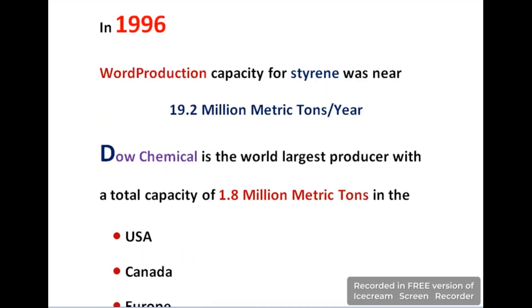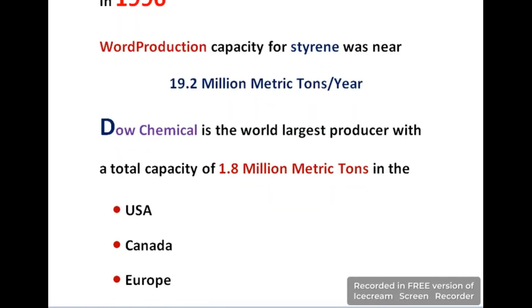In 1996, polystyrene production capacity was 19.2 million metric tons per year. Dow Chemical Industry is the world's largest producer of polystyrene and its production capacity is 1.8 million metric tons. Its industrial units are located in USA, Canada, and Europe.